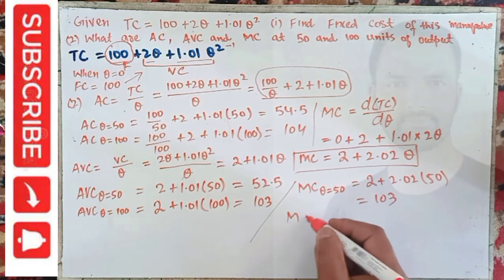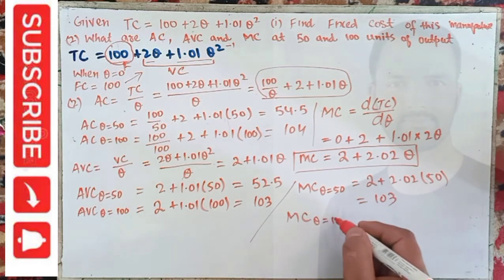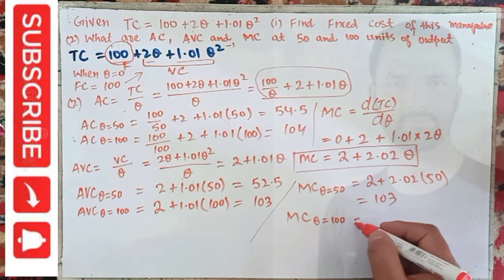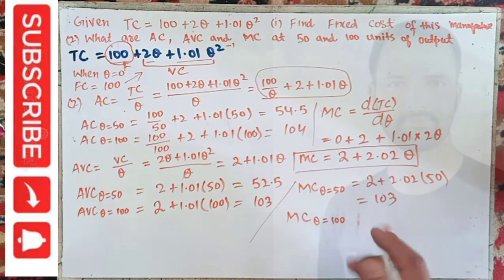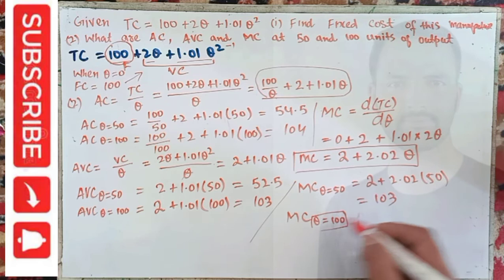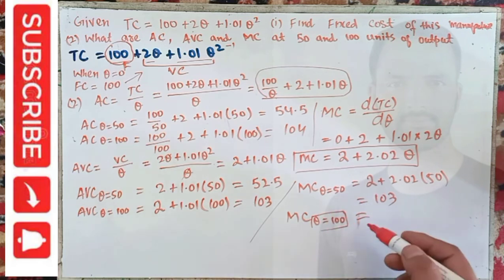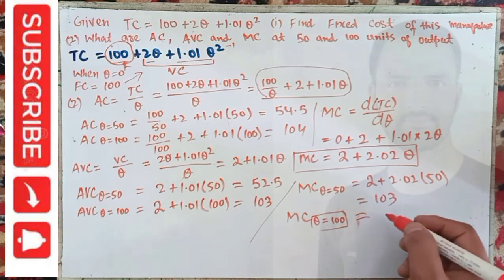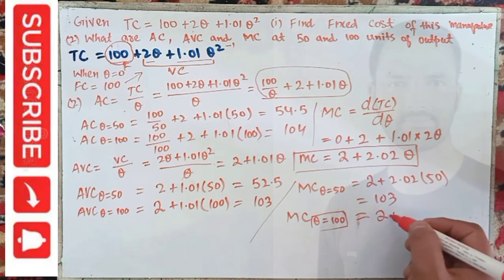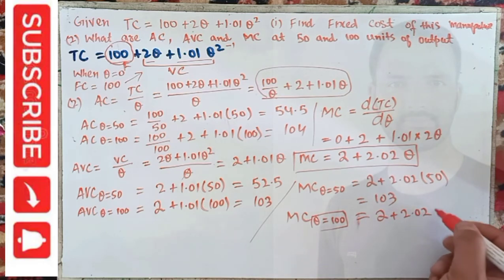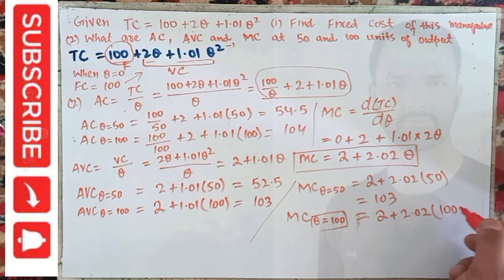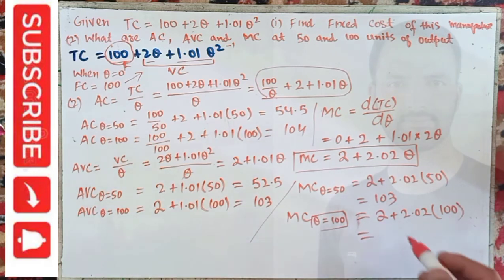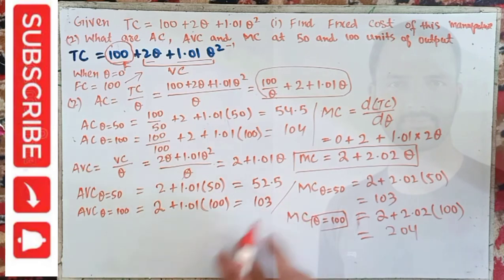Similarly, marginal cost when Q = 100: plug Q = 100 into the MC function — 2 + 2.02 × 100 — and this comes out to be 204.